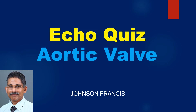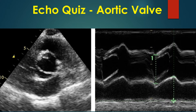ECHO quiz on aortic valve in parasternal short axis view and M-Mode. Here are two images of aortic valve: one 2D echo in parasternal short axis and another M-Mode tracing at aorta-left atrium level. What are the findings and interpretation?